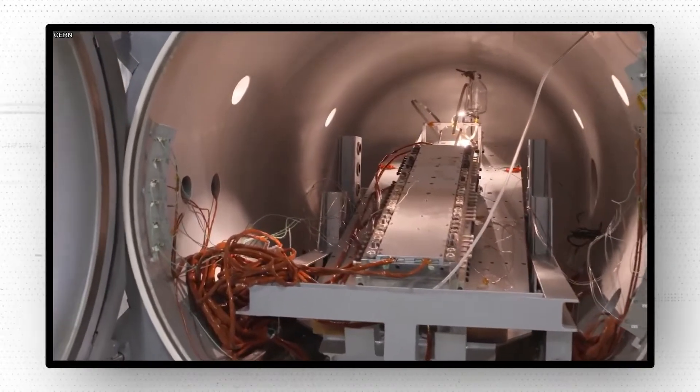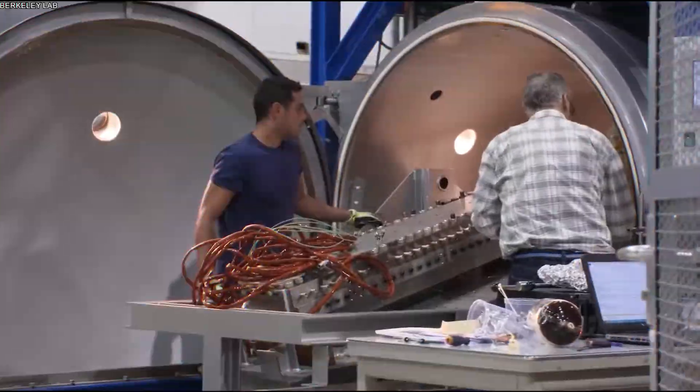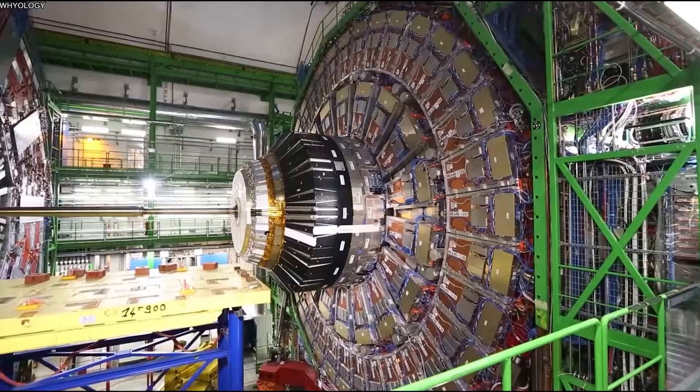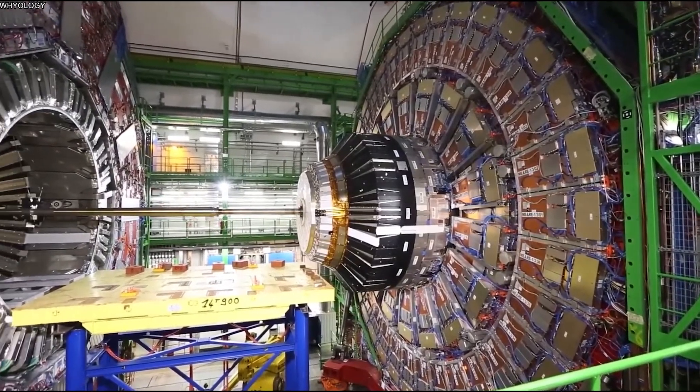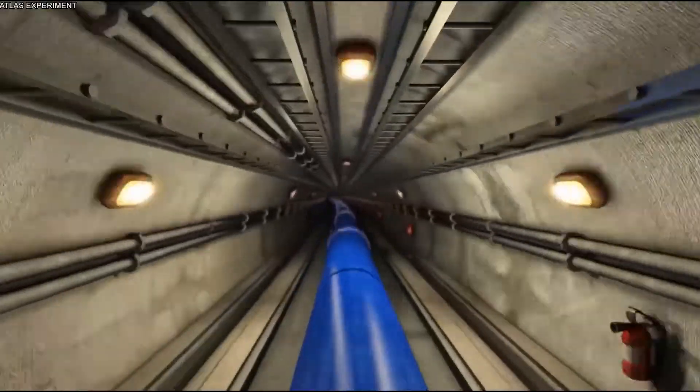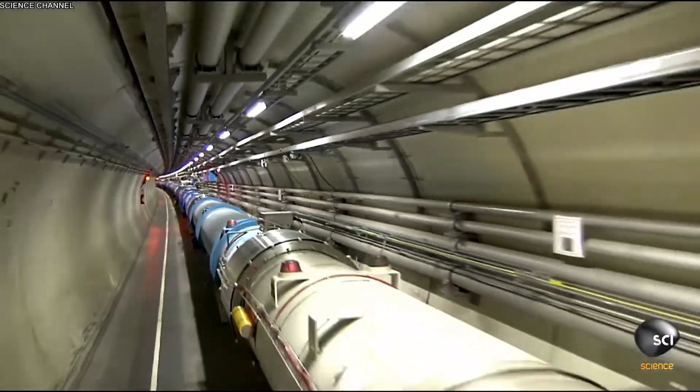Inside the accelerator, two beams of high-energy particles travel at almost the speed of light before being forced to collide. The jets travel in opposite directions in separate beam tubes. The two tubes are kept under an ultra-high vacuum. They are steered around the accelerator ring by a strong magnetic field maintained by a superconducting electromagnet.